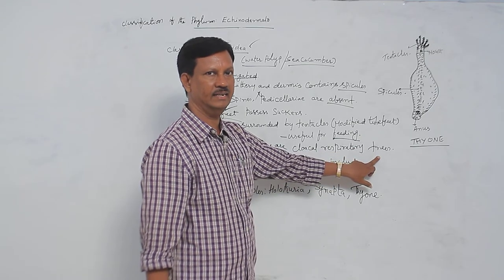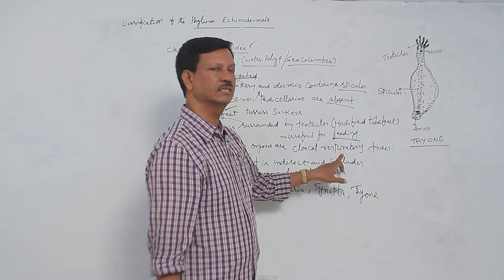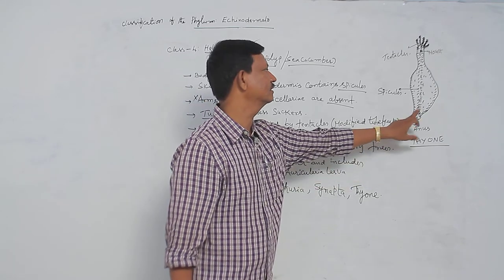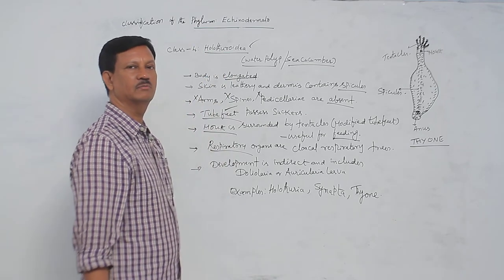The structure is tree-like and located in the cloacal region, helping in respiration. Hence they are known as cloacal respiratory trees, present at the cloacal region or posterior region of the body.